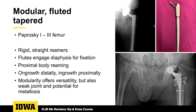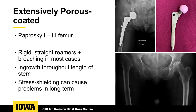Up that diaphyseal bone and get engagement of those distal flutes. The proximal body gives you strength, with offset and length options. The modularity gives you versatility, making the reconstruction a little easier to achieve your offset and length goals. But it also has a weak point with potential for trunnion and metallosis issues. Extensively porous coated stems can also be used, extended out to Paprosky type 4, in any indication for femoral revision.